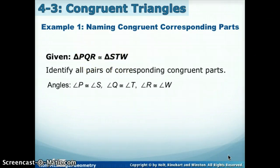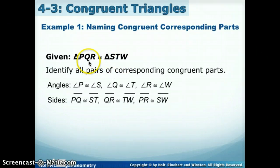Now we said triangles also have sides. So a side goes between the two vertices, so side PQ, which is first, second, is congruent to ST. The second and third, QR, is congruent to TW, and PR is congruent to SW.